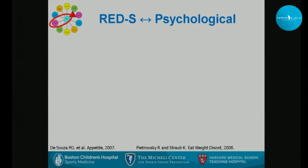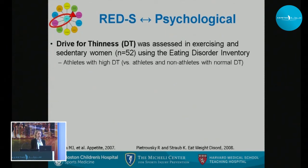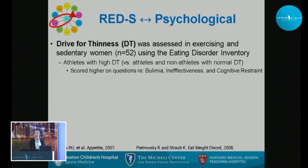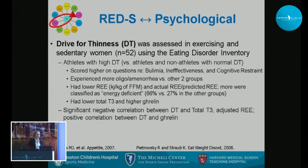Psychologically, the arrow on the triad diagram goes in both directions — psychological impairments can affect energy intake and vice versa. A drive for thinness was assessed using the Eating Disorder Inventory. Athletes with a high drive for thinness scored higher on bulimia, ineffectiveness, and cognitive restraint; experienced more oligo-amenorrhea; had lower resting energy expenditure; and had lower T3 and higher ghrelin — with a significant negative correlation between drive for thinness and T3-adjusted resting energy expenditure.